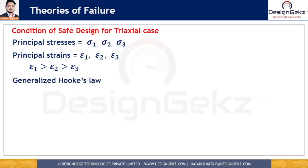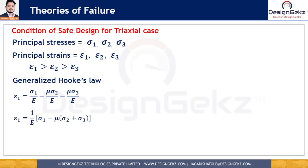According to the concept of generalized Hooke's law, we can write the relation between principal stresses and principal strains in terms of Young's modulus and Poisson's ratio as: epsilon 1 equals sigma 1 divided by E, minus mu times sigma 2 divided by E, minus mu times sigma 3 divided by E. Taking 1 over E as common: epsilon 1 equals (1/E) times (sigma 1 minus mu times (sigma 2 plus sigma 3)). Similarly, epsilon 2 equals (1/E) times (sigma 2 minus mu times (sigma 3 plus sigma 1)), and epsilon 3 equals (1/E) times (sigma 3 minus mu times (sigma 1 plus sigma 2)).